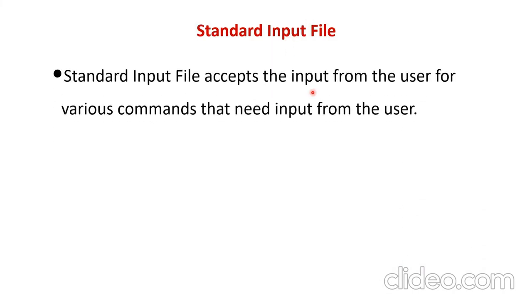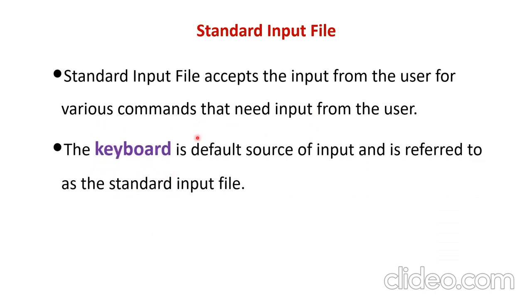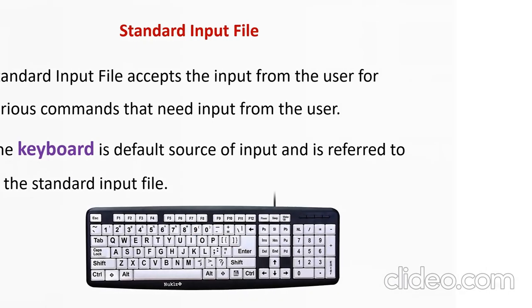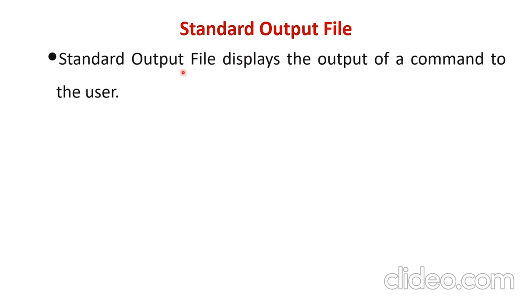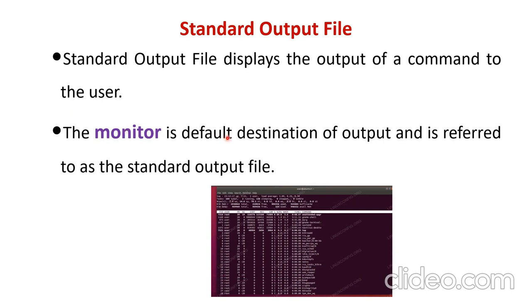Input file, first one, it accepts input from the user for various commands. The keyboard is the default source of input and it is referred to as the standard input file. Standard output file displays the output of a command to the user. You can say the example as a monitor that is used to give the output. Likewise, in the monitor, the program codings have been displayed. This is an error file.